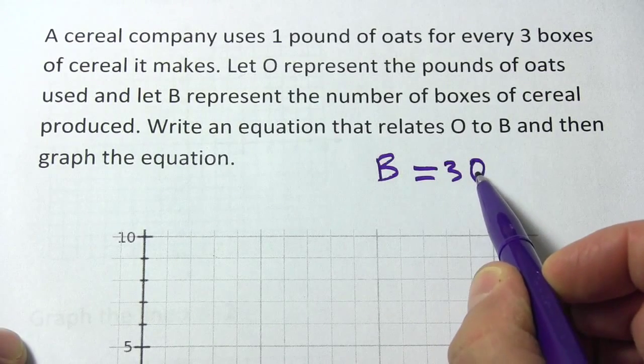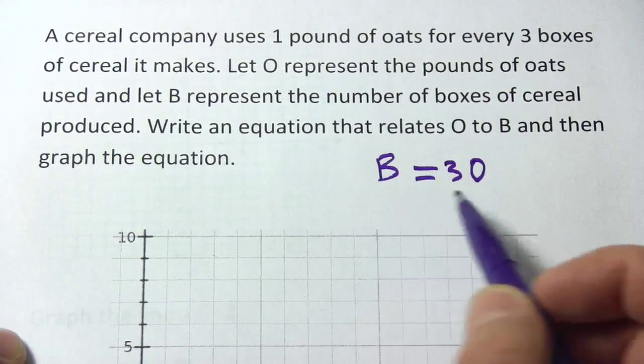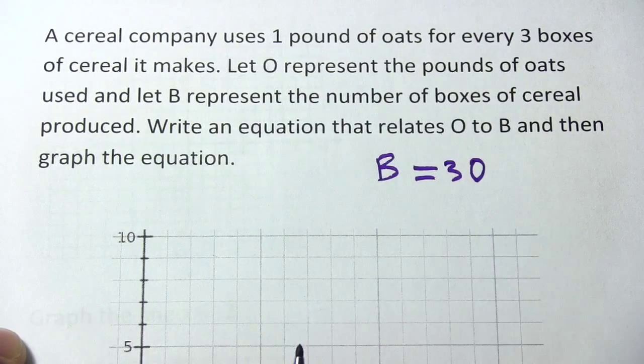So if I put in one for oats, I'd get three boxes. That makes sense, B would equal three. So there's an equation. Now how can we graph this?